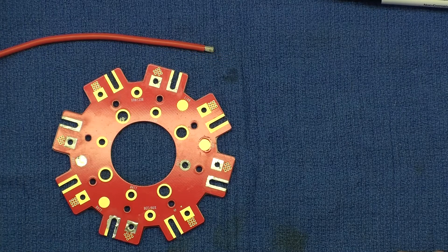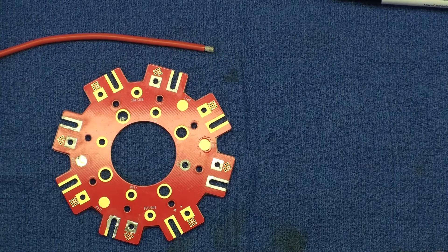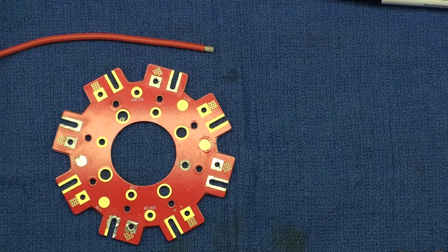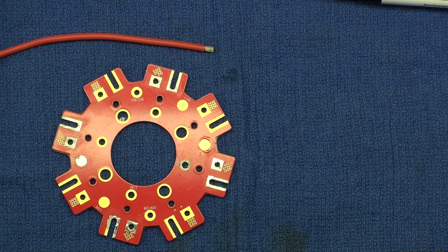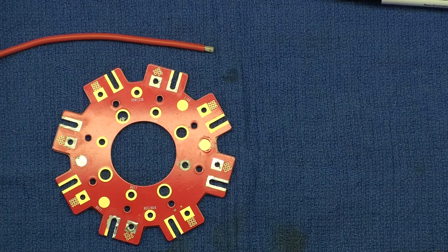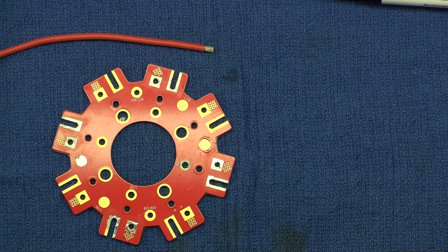Before we apply solder, we want to make sure the iron's tip is nice and clean. The Weller iron has a wet sponge for this. Make sure the tip is clean with no contaminants. This is very important. You should constantly be cleaning the tip before soldering each connection.